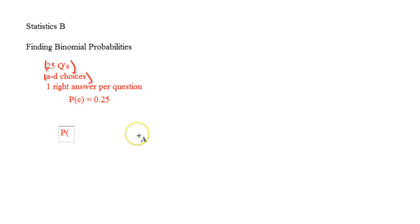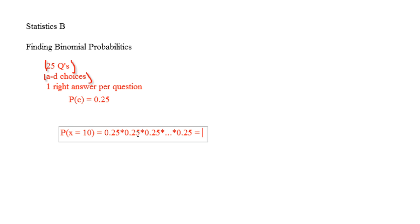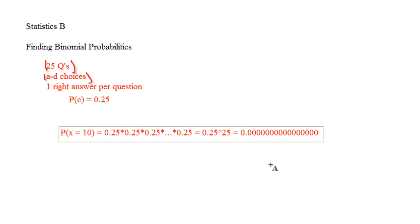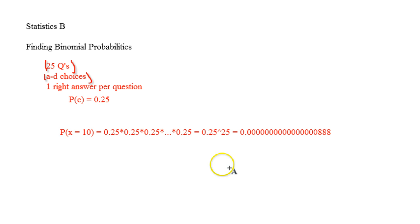What if I was trying to find the probability of getting all 25 right? So I would set it up as X equals 25 as my random variable. That would mean I got the first one right, which is a 0.25 chance, and the second one right — 0.25 — and the third one right — 0.25 — and so on until the last 0.25, and there are 25 of them. So technically this is 0.25 to the 25th power, which is a really small number.